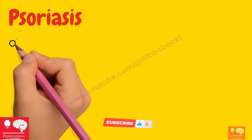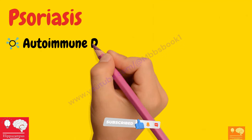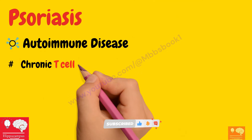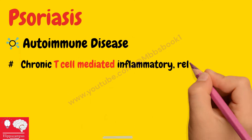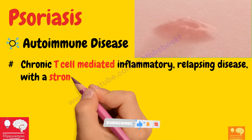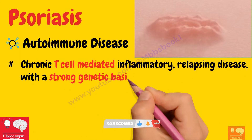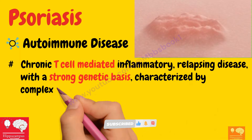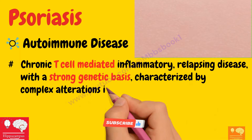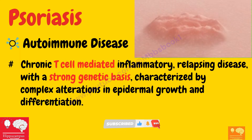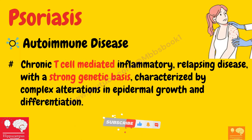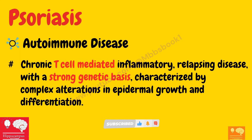Psoriasis is an autoimmune disease defined as a chronic T-cell mediated inflammatory relapsing disease with a strong genetic basis, characterized by complex alteration in epidermal growth and differentiation. It not only involves the skin — it can also involve multiple systems.